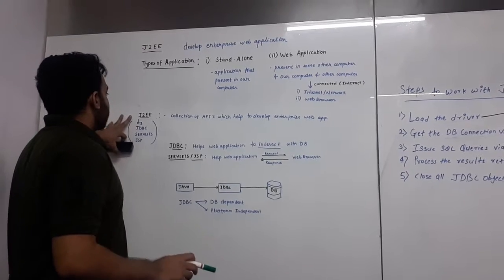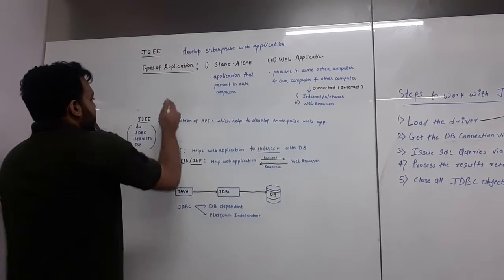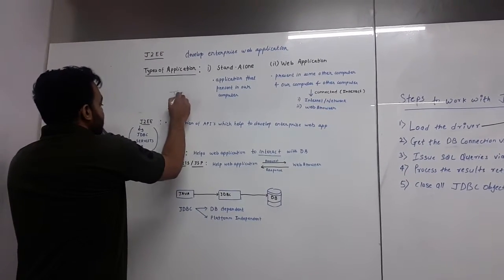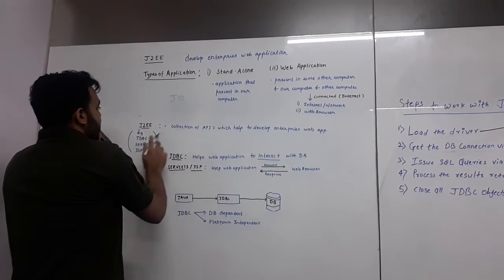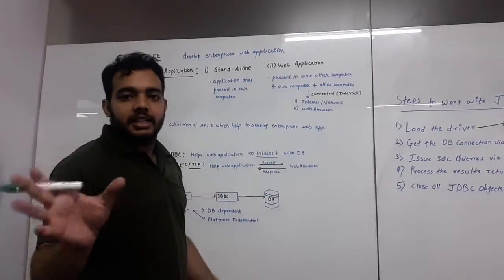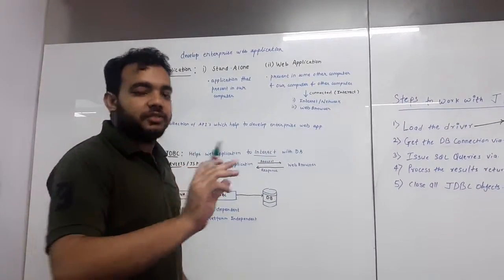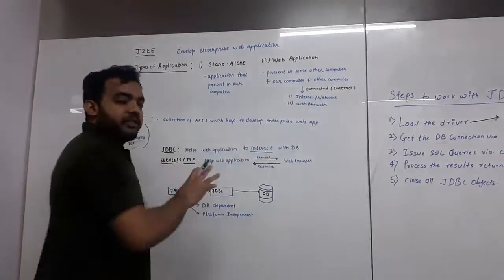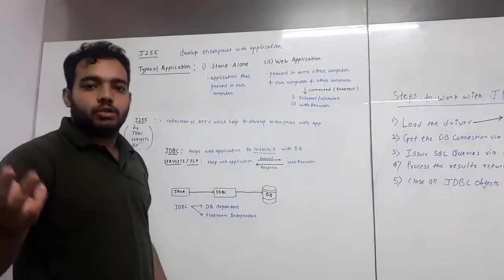What are the things inside J2EE? J2EE consists of JDBC, Servlets, and JSP. JDBC is used to help web applications interact with the database, to have a proper connection with the database, because every web application needs a database to run.